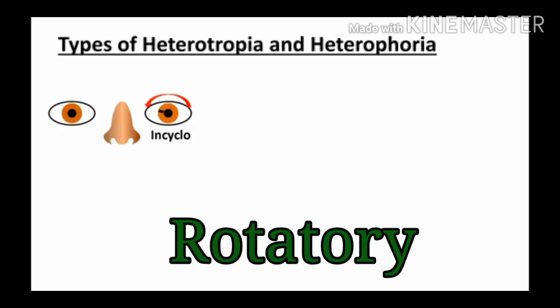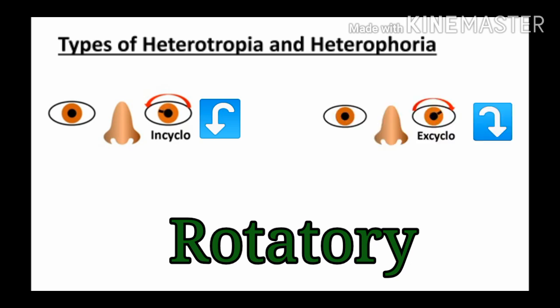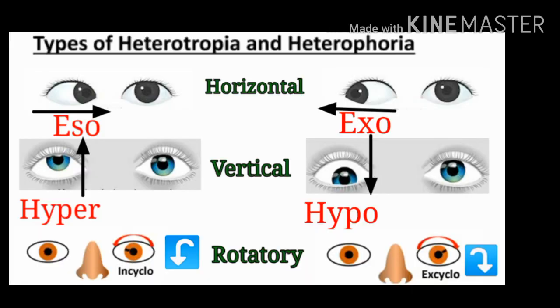In rotatory conditions, two deviations are present. If the eyes are deviated anti-clockwise it is called incyclo-deviation, and if deviated clockwise it is called excyclo-deviation. To summarize: if a deviation is visible it is manifest — a tropia; if not visible previously but confirmed after the cover test it is a latent deviation — a phoria. This combination diagram shows all deviations — you can take a screenshot if you want.